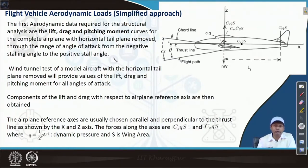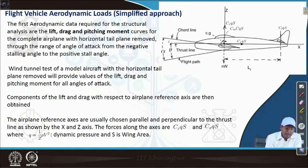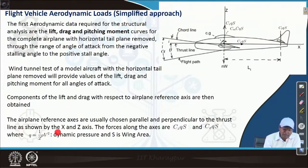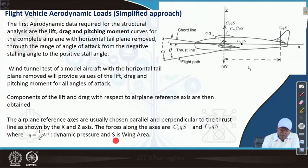Negative and positive stalling angle — stalling is the phenomenon when an aircraft loses its lift. Wind tunnel tests of a model aircraft with the horizontal tail plane removed provide values of lift, drag, and pitching moment for all angles of attack. Components of lift and drag with respect to the airplane reference axis are then obtained. The airplane reference axes are usually chosen parallel and perpendicular to the thrust line, shown as x and z axes. The forces along the axes are Cz·q·S and Cx·q·S, where q is the dynamic pressure equal to half rho v squared, and S is the wing area.